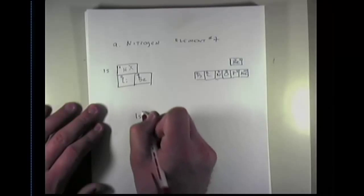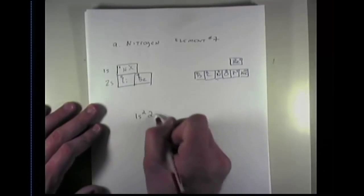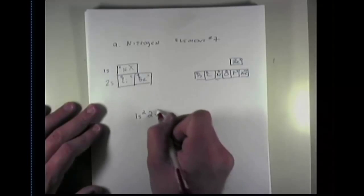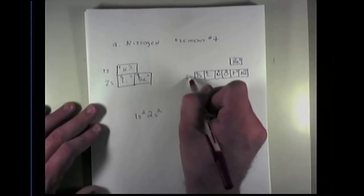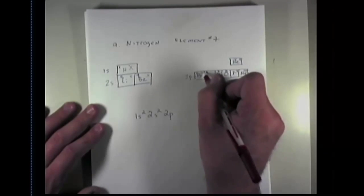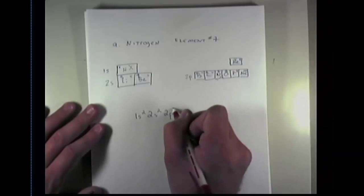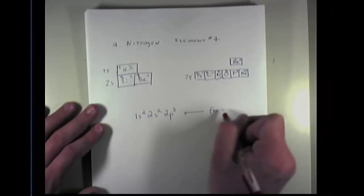The first row corresponds to a 1s orbital. So we count the first row, 1s1, 2. So I write 1s2. Then we move on to the second row, which in this block is 2s. So I've now got 2s1, 2. Now if I get over here, I'm in the p block, and p's start with 2p. I now count 1, 2, 3. That is the electron configuration for nitrogen.